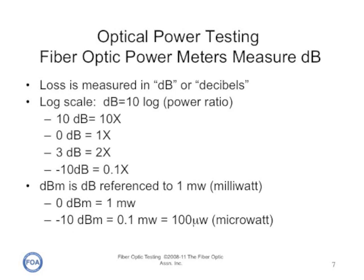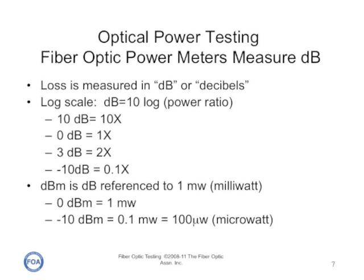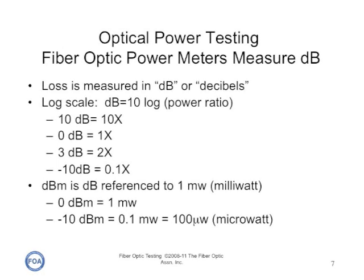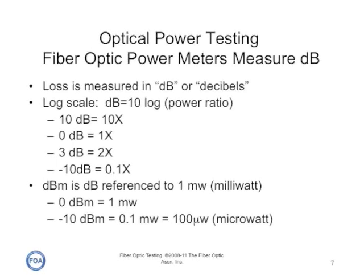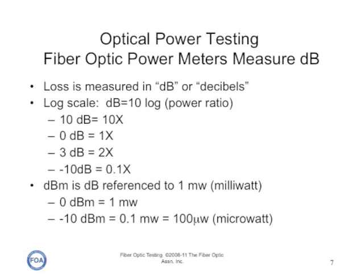dBm is very similar, except the dB is referenced to one milliwatt. So zero dBm equals one milliwatt, minus 10 dBm would be a tenth of a milliwatt, and 10 dBm would be 10 milliwatts.